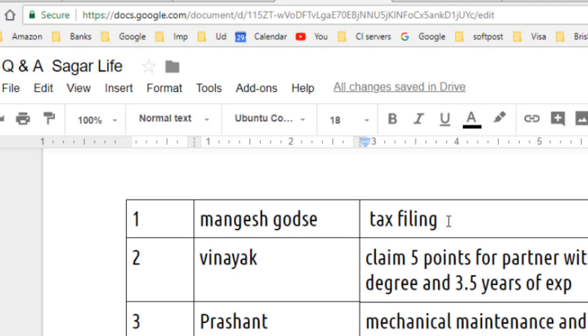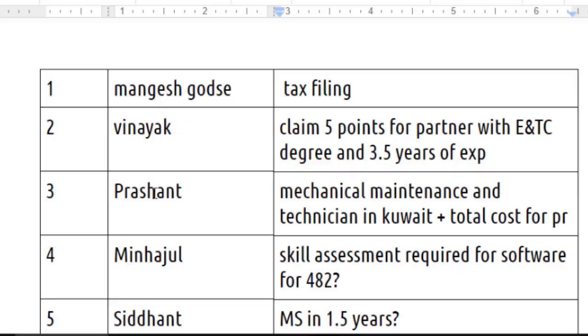Since you are here on a short-term basis, you will have to pay a flat 30% tax on your income. The next question is asked by Vinayak — he's asking if he can claim five points for his partner who has an Electronics and Telecommunication degree and 3.5 years of experience.